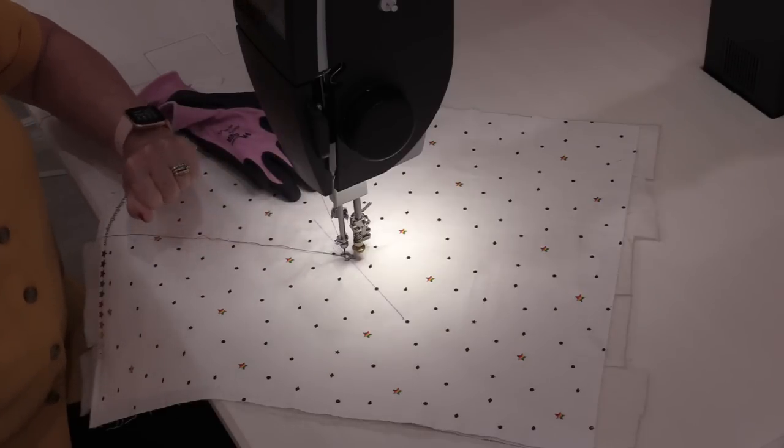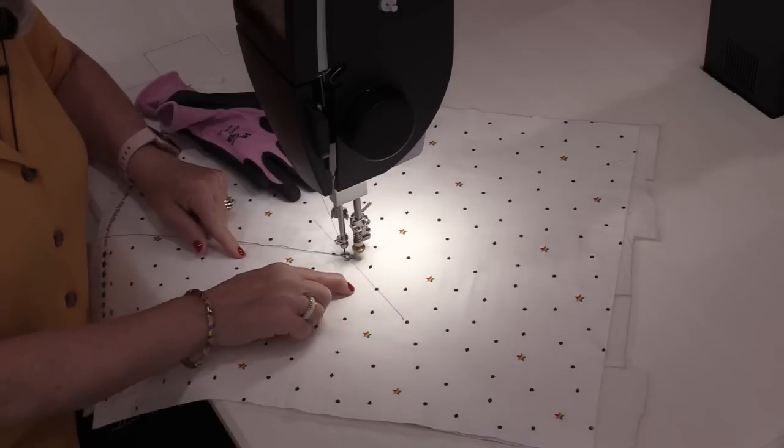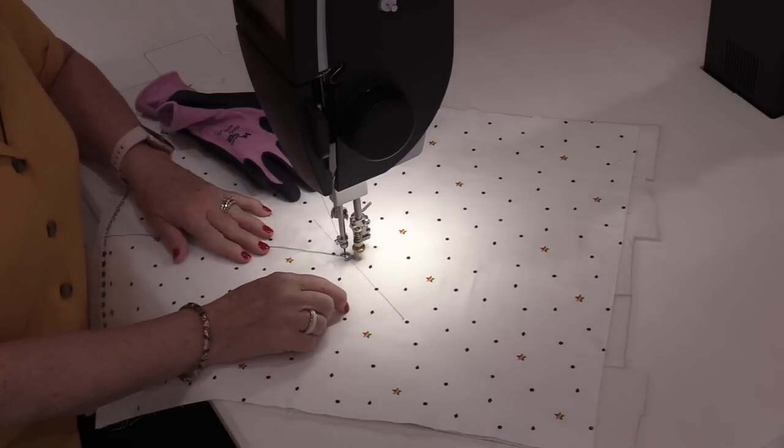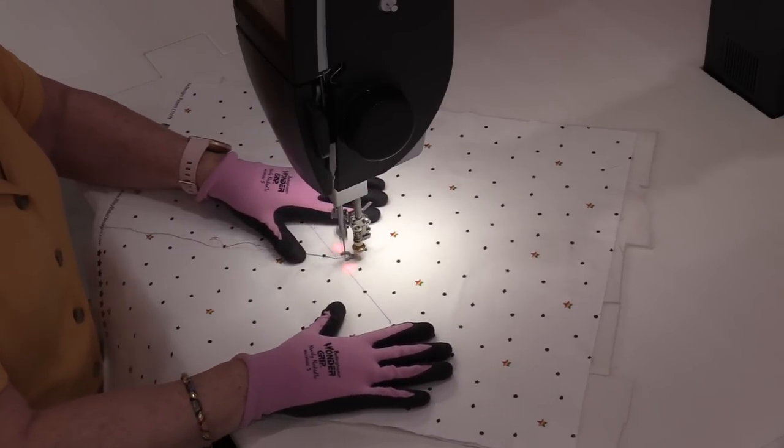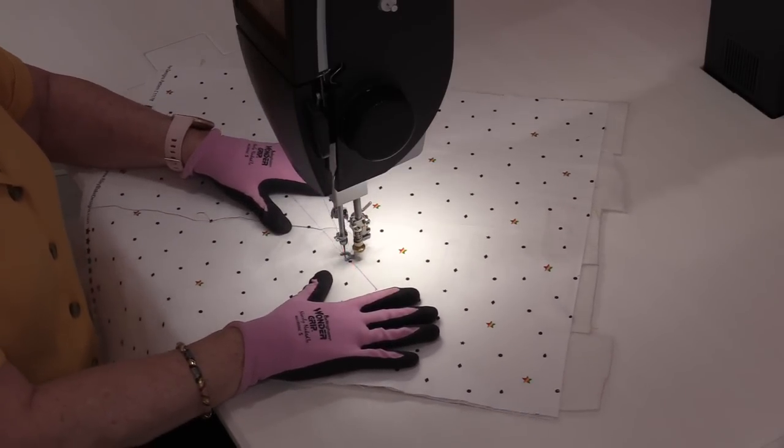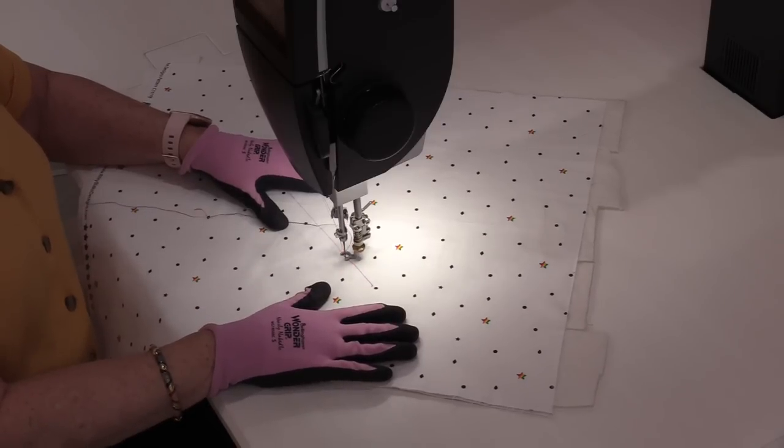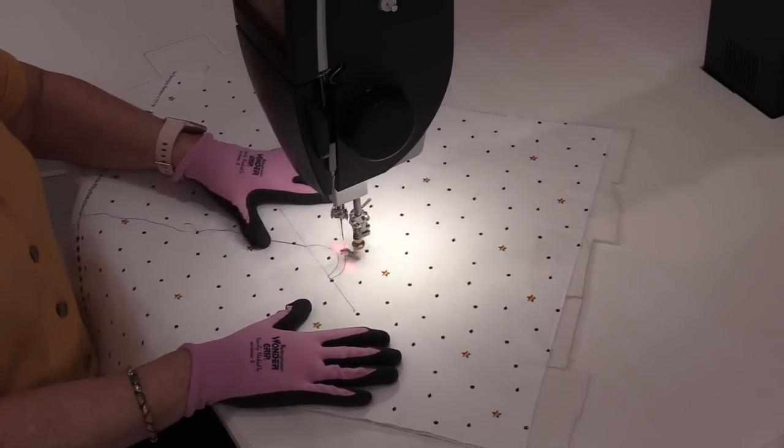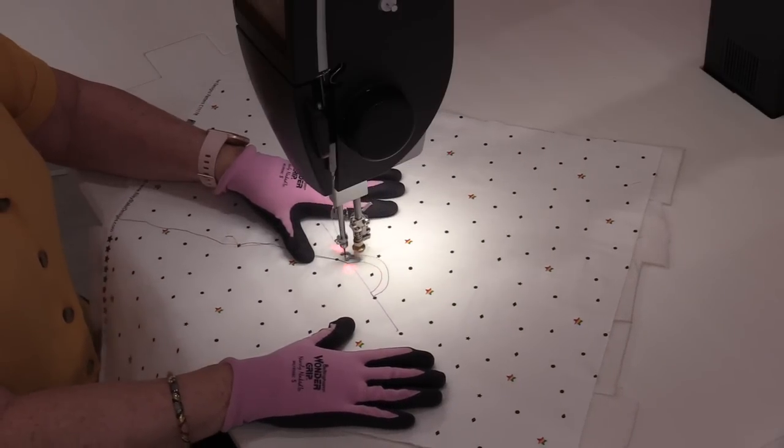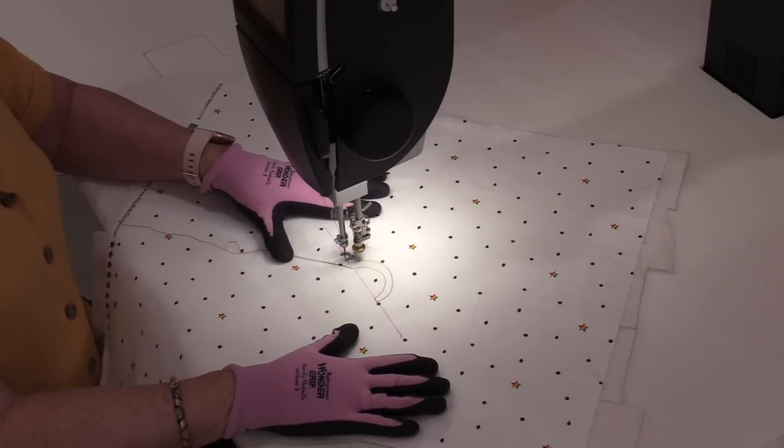So I've brought up my bobbin thread. I'm going to start with that needle down, and I'm going to make those little shapes, which are really just letter C's. I'm going to make that first letter C. Now travel along the line, and go back around that letter C. Travel that line, and go back around.